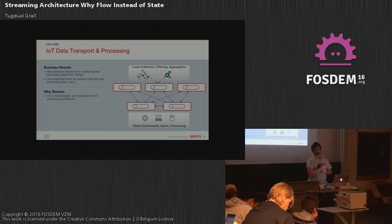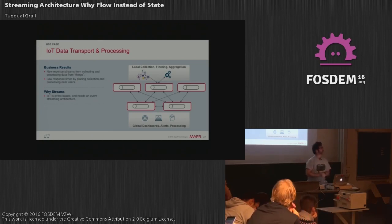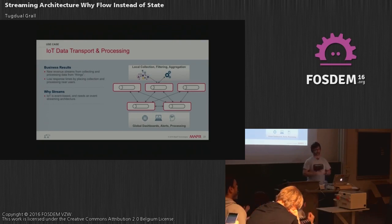I invite you to look at Kafka if you haven't. The API is quite simple and cool — see how it integrates with distributed processing layers like Flink. You will have a very rich toolbox to create highly available distributed systems. Thank you.